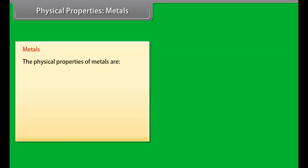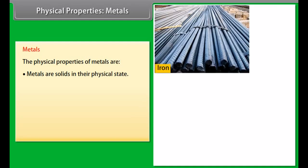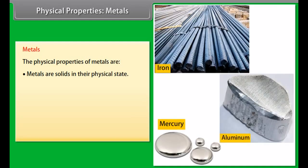The physical properties of metals are physical state. Metals are solid at room temperature. For example, iron, aluminium. Only mercury is liquid metal.